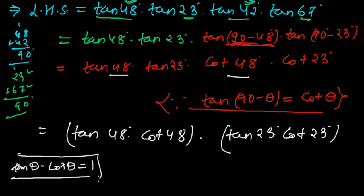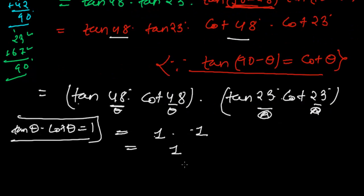Again, we know that tan θ times cot θ equals 1. So tan 48° times cot 48° means tan θ times cot θ, which equals 1. And tan 23° times cot 23°—we can suppose this as angle α—so tan α times cot α also equals 1.